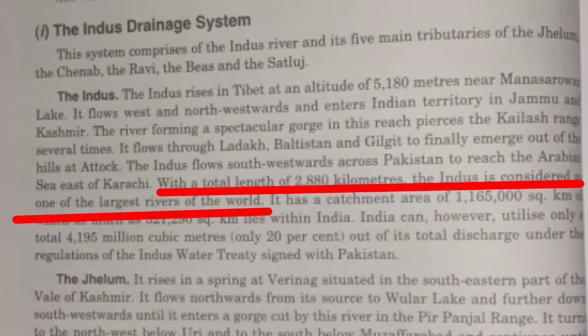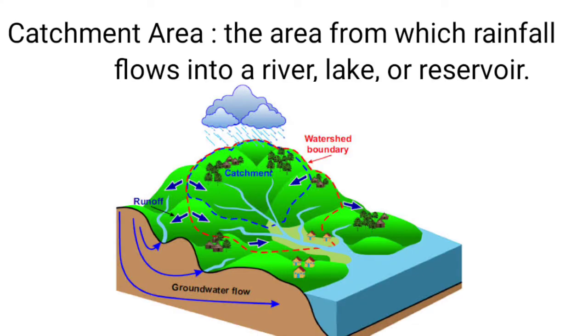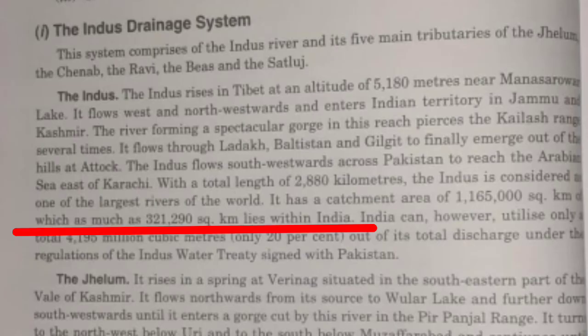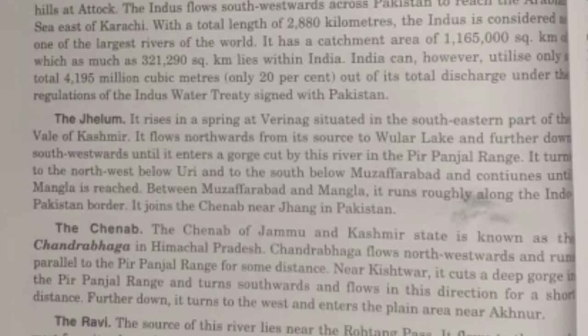The length of River Indus is 2,900 kilometers and it has a catchment area of 1,165,000 square kilometers. The catchment area is the area from where a river derives its water. In India, the catchment area is around 321,000 square kilometers. However, India is only allowed to use 20 percent of the total discharge of water, according to the Indus Water Treaty signed with Pakistan.